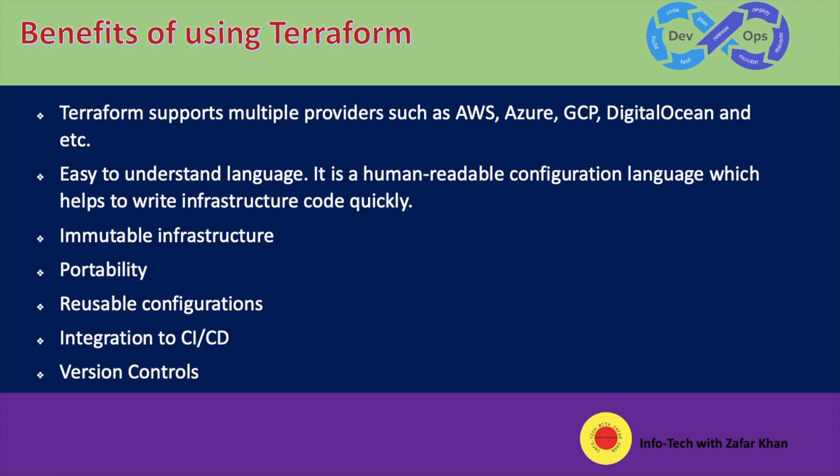Specifically, Terraform handles creating the VPC, creating servers, setting up security, installing Jenkins, and similar tasks — and they must be done in the correct order because of dependencies.